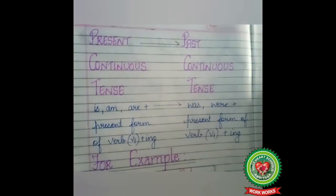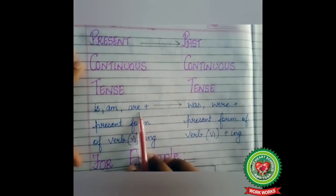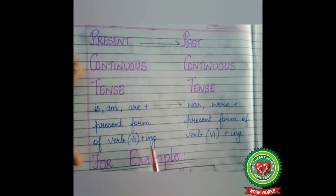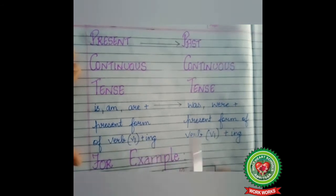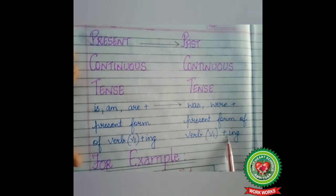Now we are going to discuss how to change direct speech into indirect speech if the reported speech is in present continuous tense. The rule of present continuous tense is: subject + is/am/are + present form of verb + ING. And it will change into: was/were + present form of verb + ING.